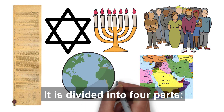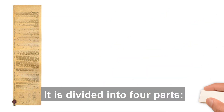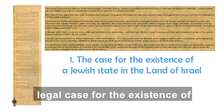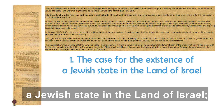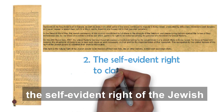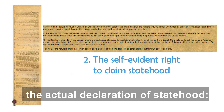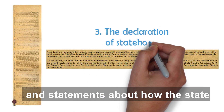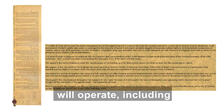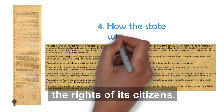It is divided into four parts: a biblical, historical, and international legal case for the existence of a Jewish state in the land of Israel; the self-evident right of the Jewish people to claim statehood; the actual Declaration of Statehood; and statements about how the state will operate, including the rights of its citizens.